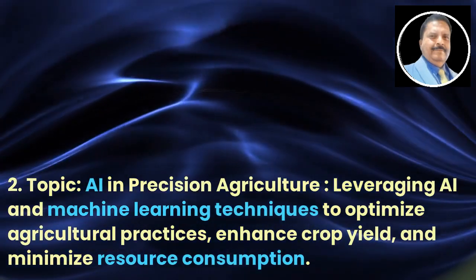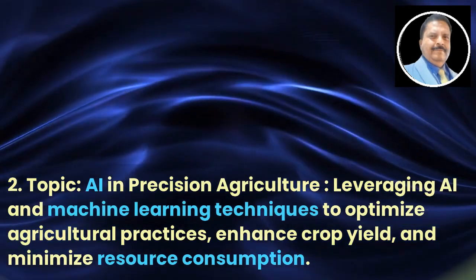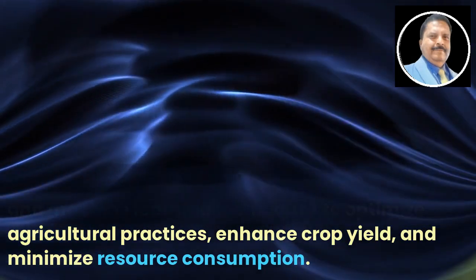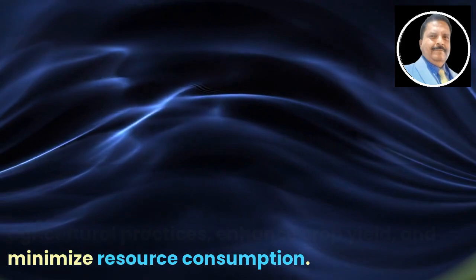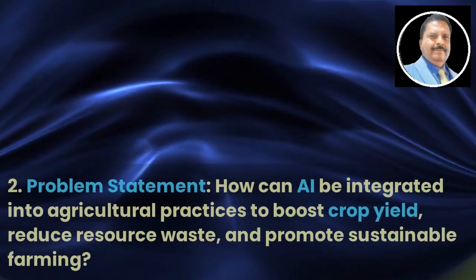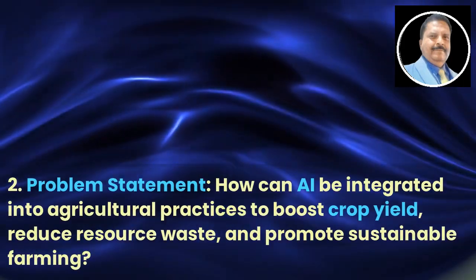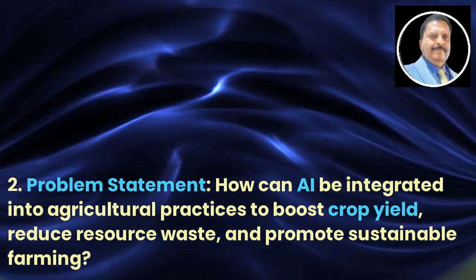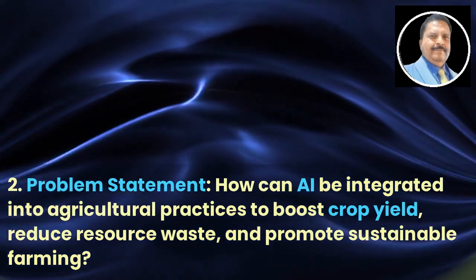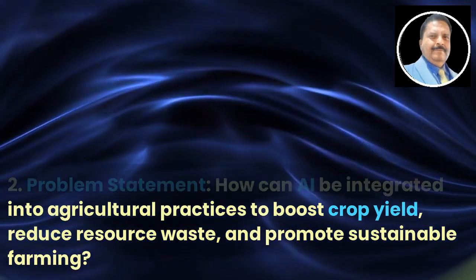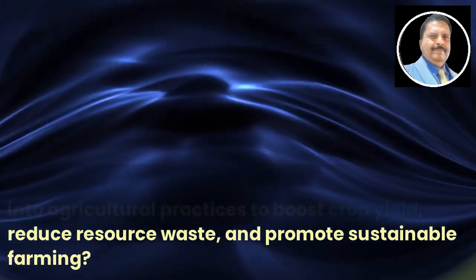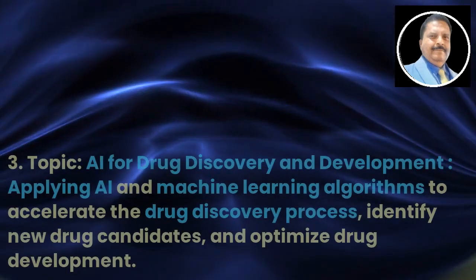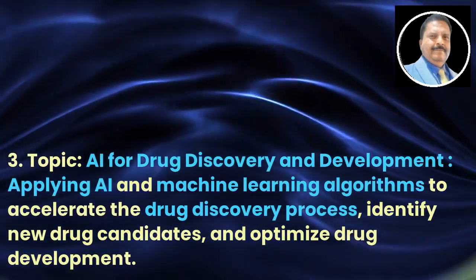Topic 2: AI in Precision Agriculture. Leveraging AI and machine learning techniques to optimize agricultural practices, enhance crop yield, and minimize resource consumption. Problem statement: How can AI be integrated into agricultural practices to boost crop yield, reduce resource waste, and promote sustainable farming?